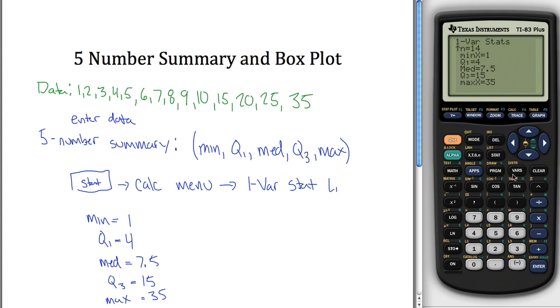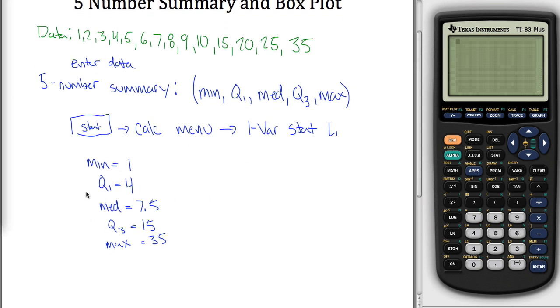So this right here is your five number summary, which is kind of nice. We can now move on to our box plot. It'll turn out when you're making your box plot, you'll kind of use some of this stuff. So when you're making your box plot, let's see. Box plot: first thing is enter your data, but we already have our data in there. I'll list it anyways in case you're just doing that. Enter data.